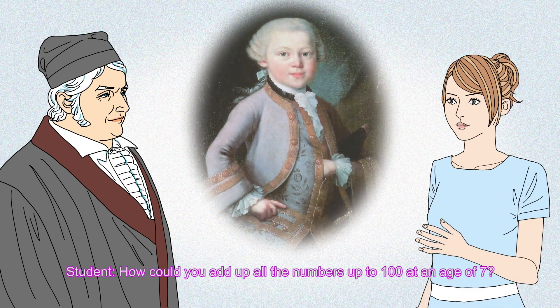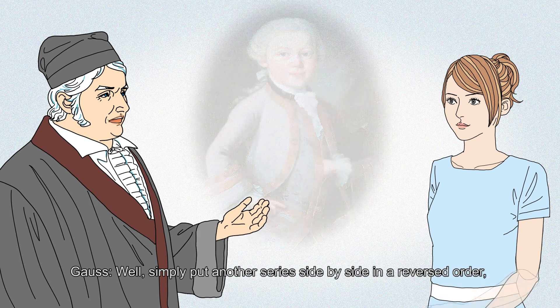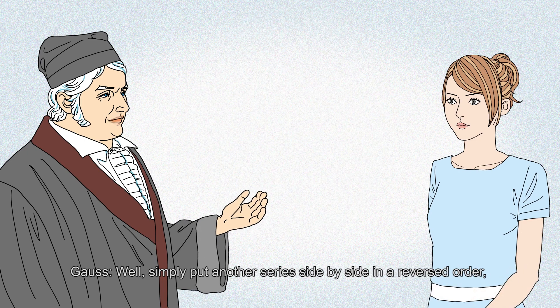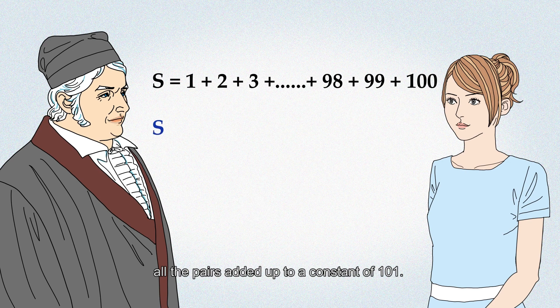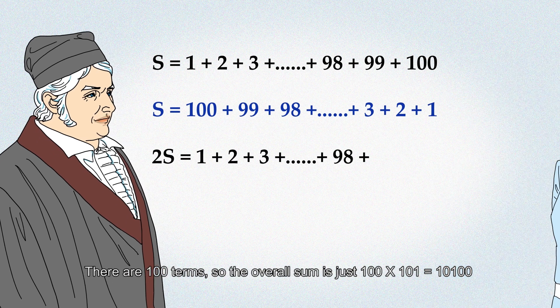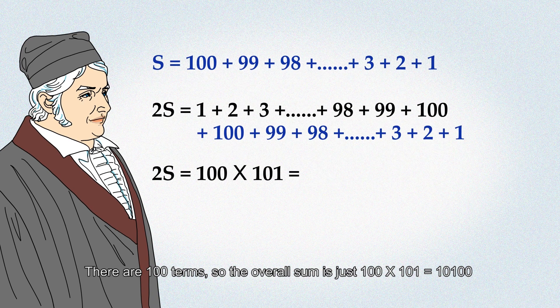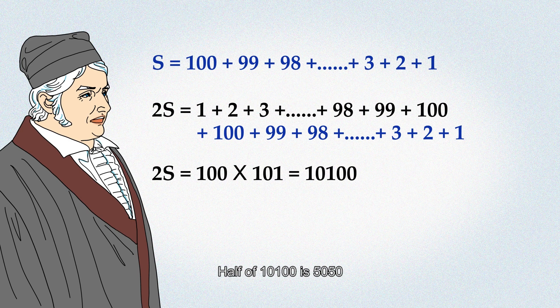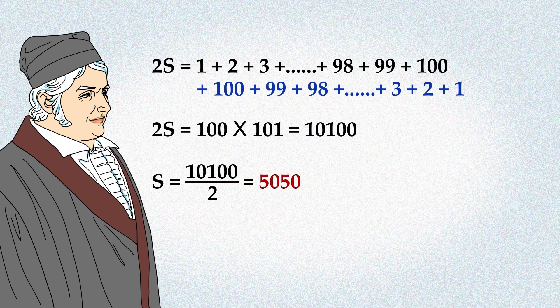How could you add up all the numbers up to 100 at an age of 7? Well, simply put another series side by side in a reversed order. All the pairs added up to a constant of 101. There are 100 terms, so the overall sum is just 100 times 101 equals 10,100. Half of 10,100 is 5050.